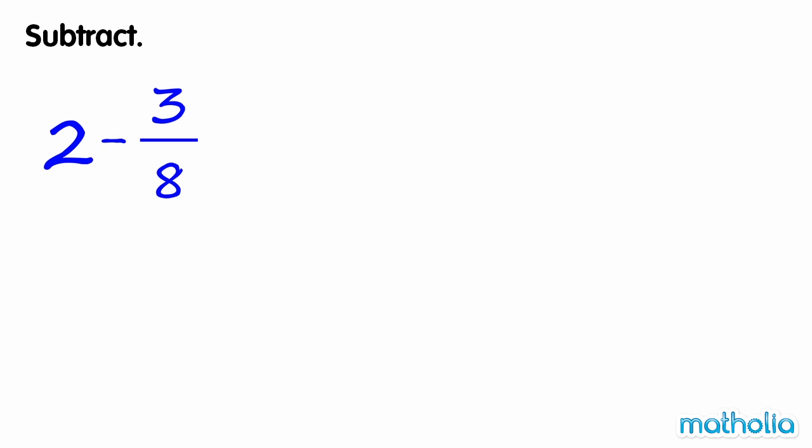Subtract. We need to find 2 minus 3 eighths. In order to subtract, we need to regroup 2 into a mixed number where the denominator of the fraction part is 8. 2 is equal to 1 and 8 eighths.